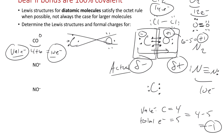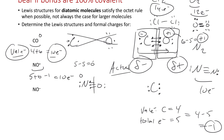For NO⁺: 5 electrons for nitrogen + 6 for oxygen − 1 for the positive charge = 10 total electrons. Same Lewis structure as CO — a triple bond. The formal charge on nitrogen: should have 5 and does have 5, so formal charge = 0. The formal charge on oxygen: 6 − 5 = +1. Zero plus one gives the right overall charge of +1 for this ion. Oxygen is the positive atom, nitrogen is neutral. Thinking about electronegativity: oxygen is more electronegative than nitrogen, so oxygen will pull electron pairs closer towards itself, actually ending up with a charge greater than +1, and nitrogen will end up partial negative.